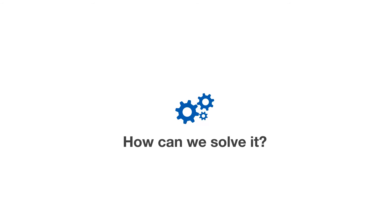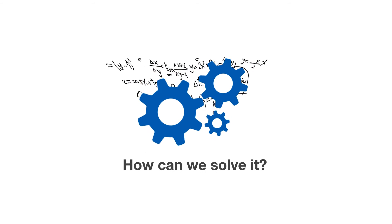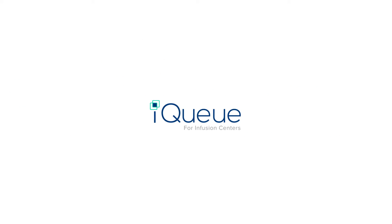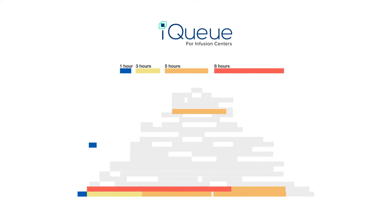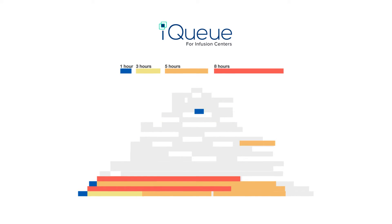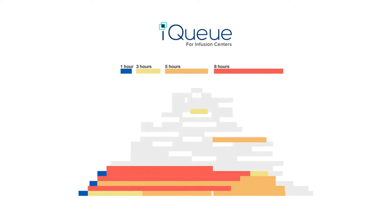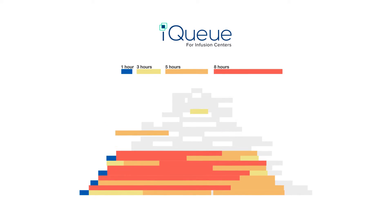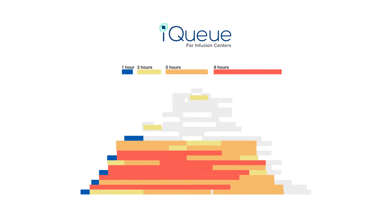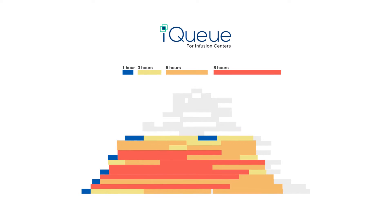How can we solve it? Using data science and machine learning — that's where IQ for infusion centers comes in. IQ looks at your daily appointment patterns, as well as chair and staff availability, and then uses patented constraint-based optimization algorithms to come up with appointment slots that fill gaps and level-load the daily schedule.